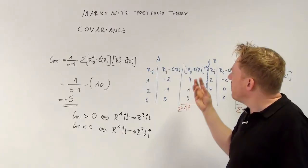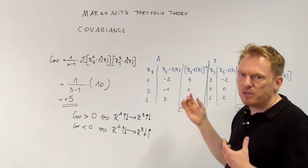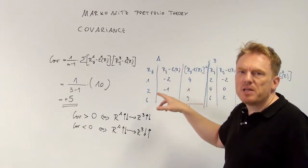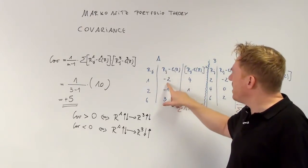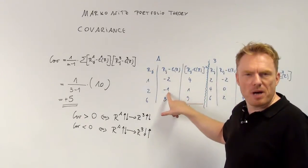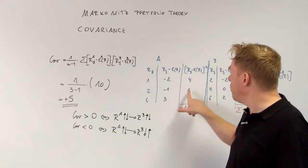So then next step is to calculate the squares of every single difference. Minus 2 times minus 2 is equal to plus 4. Minus 1 times minus 1 is equal to plus 1. 3 times 3 is equal to 9.